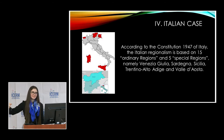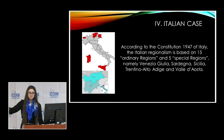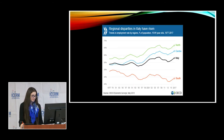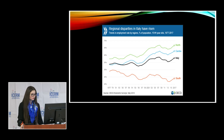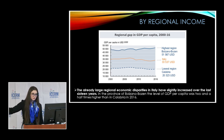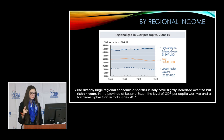Now for the practical perspective on Italy. Italy's regionalism is specified in the 1947 Constitution. The data shows the North is richer than the South with a large inequality gap. The highest-income region is Bolzano-Bozen at $51,567 per capita, while the lowest is Calabria at $20,323 — a difference of two and a half times.